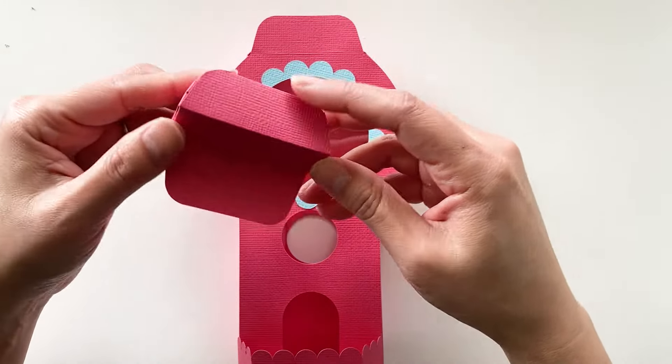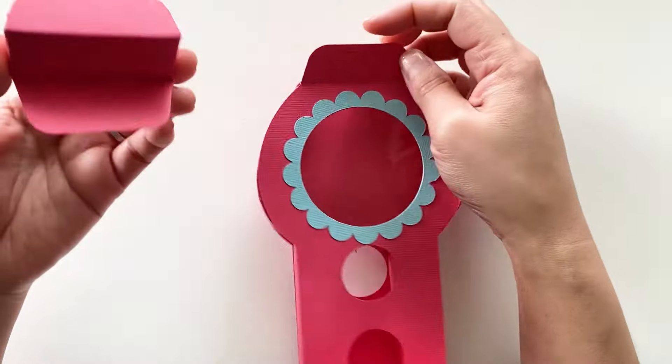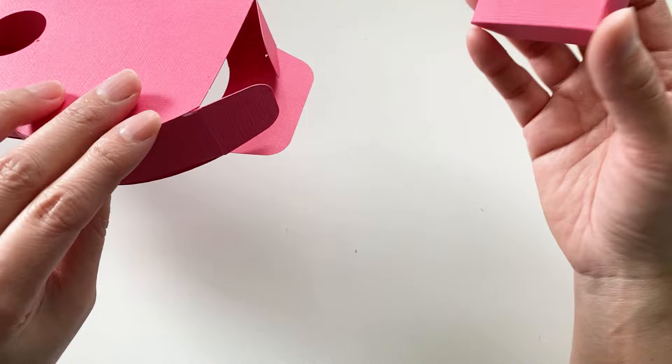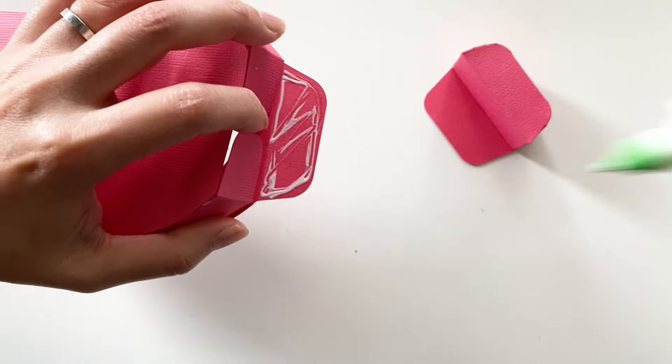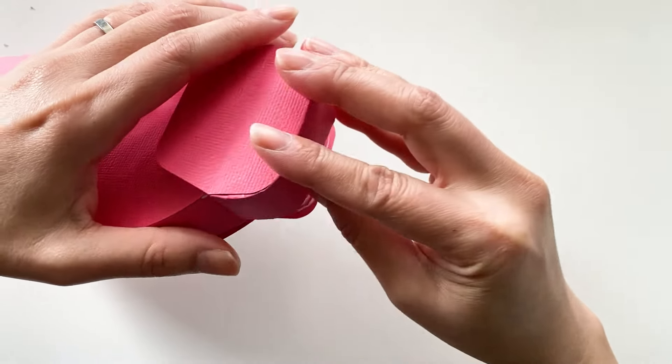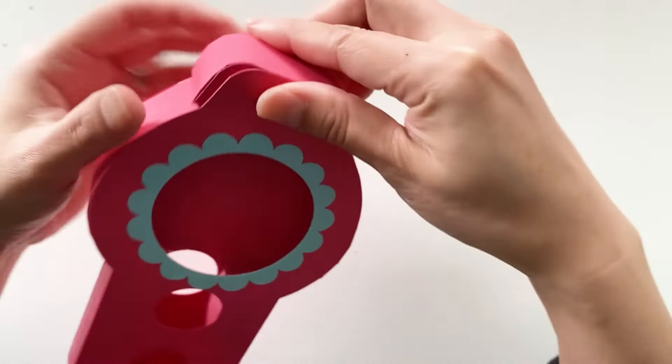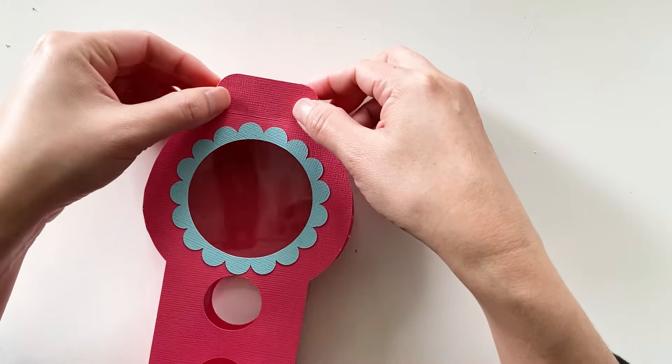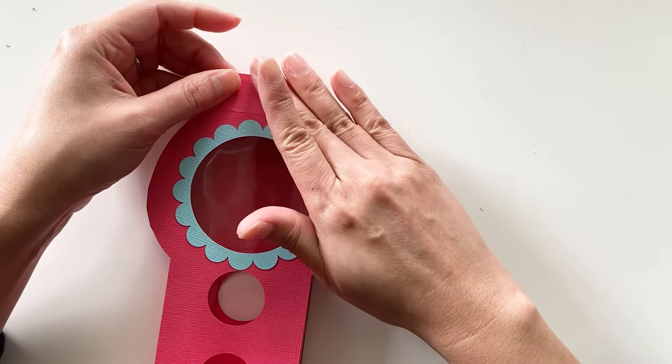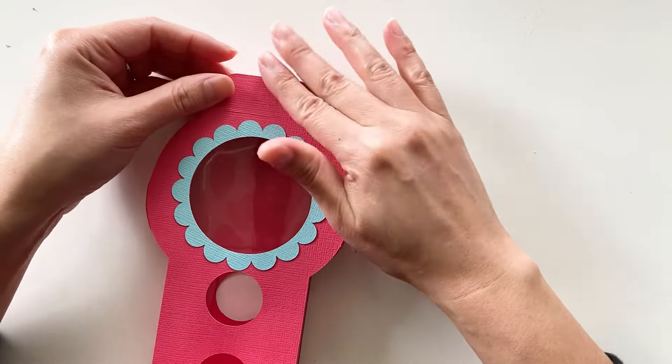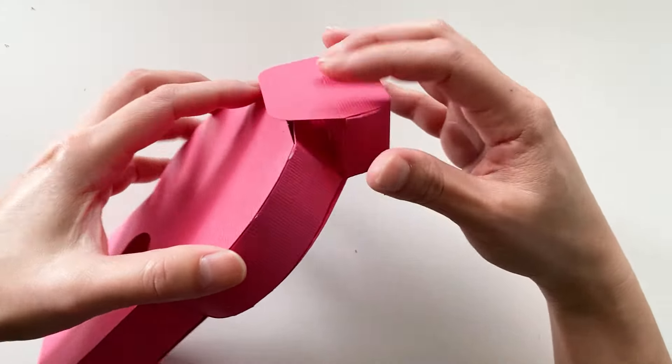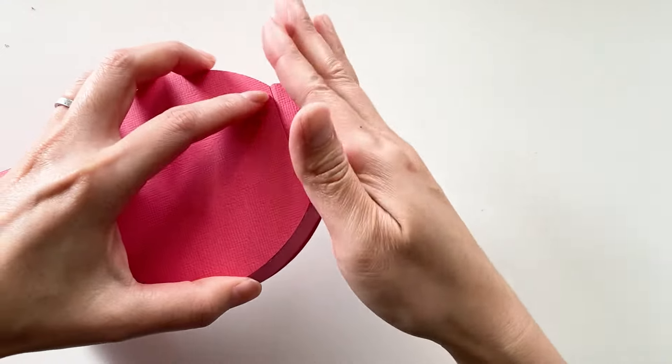Get the lid piece. Attach the lid to here and have the tabs at the back so the tabs could insert into the box. Put the tabs at the back. Give it a good press. Insert it in.